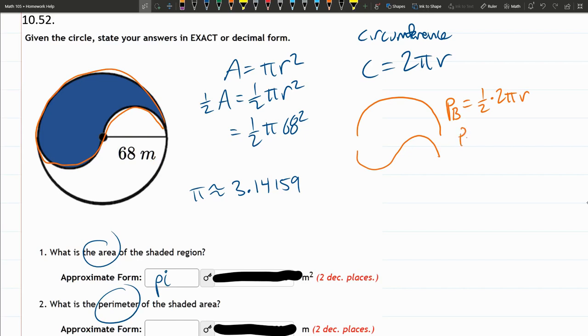So this Pb is one-half times 2, and the one-half times 2 cancels out. So you can just not worry about that. That will cancel times pi times 68. So the big perimeter is 68 pi.